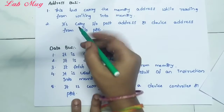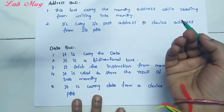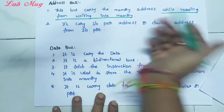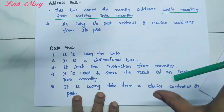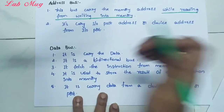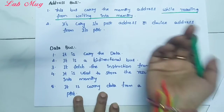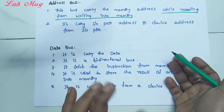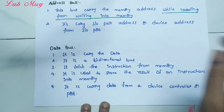The main purpose of the address bus is: this bus carries the memory address. It carries the memory address while reading from and writing into memory. That is the main purpose - to access data in memory. It also carries the input/output port address or device address. Through these two points, the address bus carries memory address and device port address.